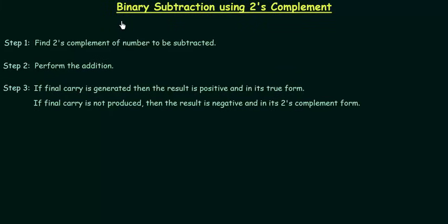In the last presentation we completed binary subtraction using one's complement. There is one drawback in one's complement method: whenever the final carry is equal to one, we have to add it back to the obtained result. But in case of binary subtraction using two's complement, we don't have to add the final carry back to the result because there is no end-around carry in two's complement. So if we compare the two methods, two's complement method is much better.